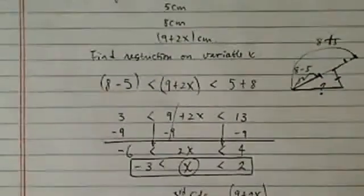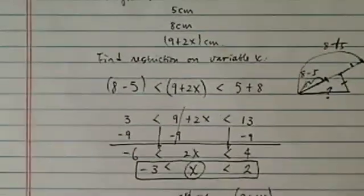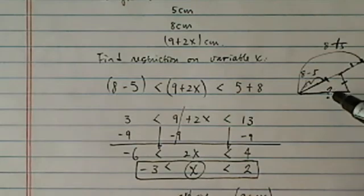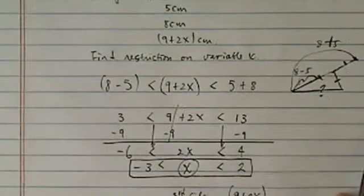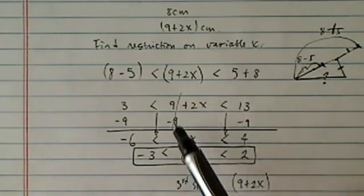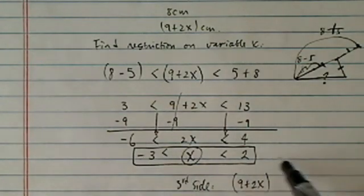All right, so let's see. Anything else I want to talk about? Not really. This is a pretty simple problem. Like I said, the third side has to be in between the sum and the difference, which graphically makes sense. And then from here, you just have to be careful when you solve inequalities here. And here's the final answer.